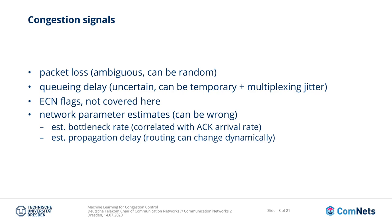The third signal is explicit congestion notification flags, but they are not covered in this lecture. Source nodes can actually estimate network parameters, but like any estimate, these can be wrong. The first parameter to estimate would be the bottleneck rate or link capacity of the bottleneck, which you can estimate by looking at acknowledgements received in a certain amount of time. The second is the propagation delay. However, if there is a change in routing inside the network, we might not even be going through the same bottleneck anymore, and then suddenly these estimates are very wrong.